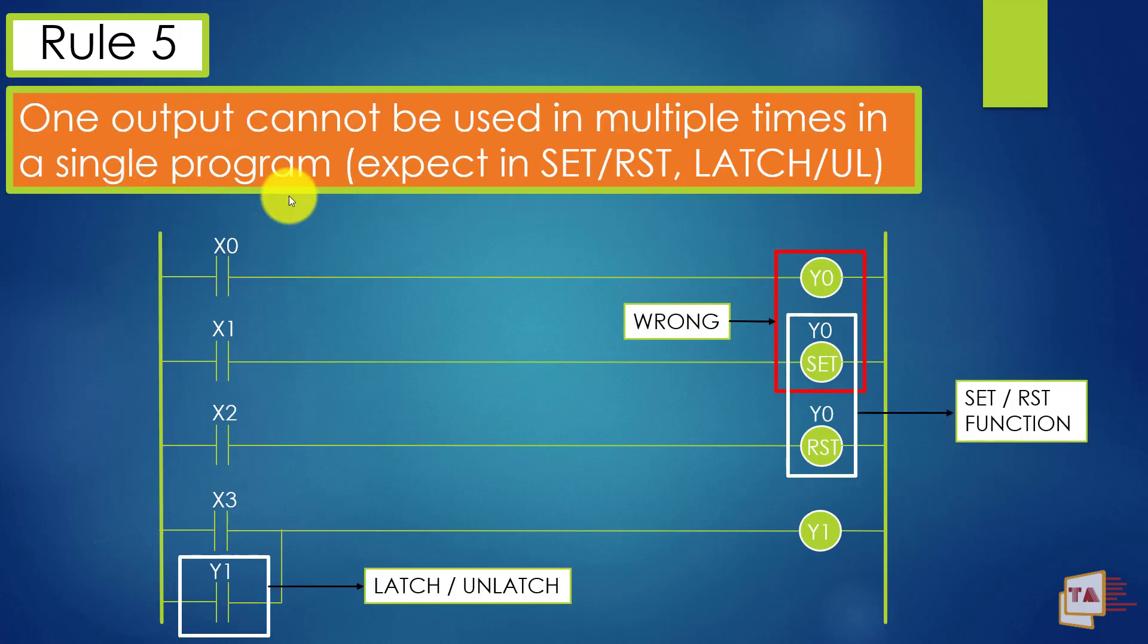Then rule number five: one output cannot be used multiple times in single program, except in set reset, latch unlatch. These both concepts are same. Some PLCs, they will call set reset, but in Allen Bradley, they will call latch unlatch. Latch unlatch is also nothing but set and reset. See here, we are turning on Y0 using X0 and we are again giving Y0 in set condition. So this will be malfunction. Your PLC, while the program execution, will throw some error or some malfunction. Maybe you may face the malfunction in your machine sequence. So you cannot use the same names in two coils. This is the wrong method.